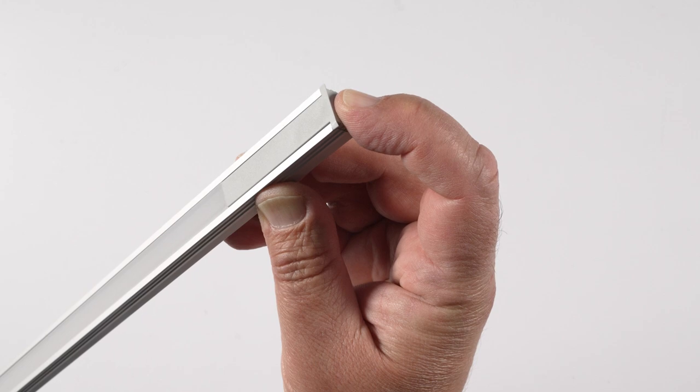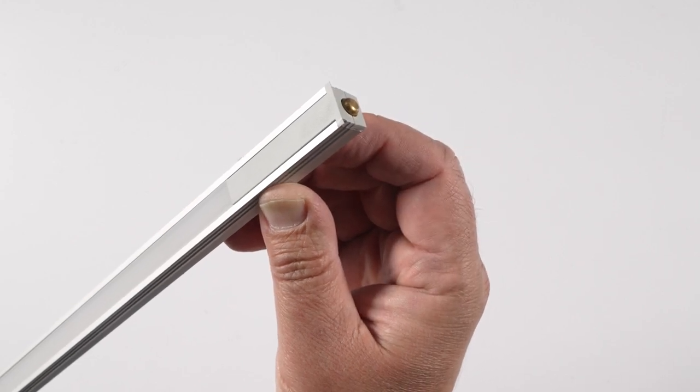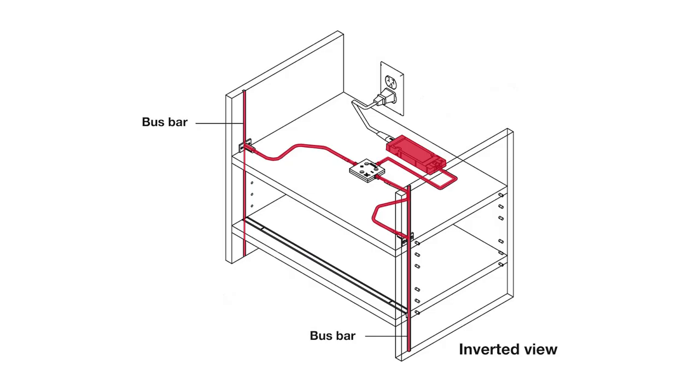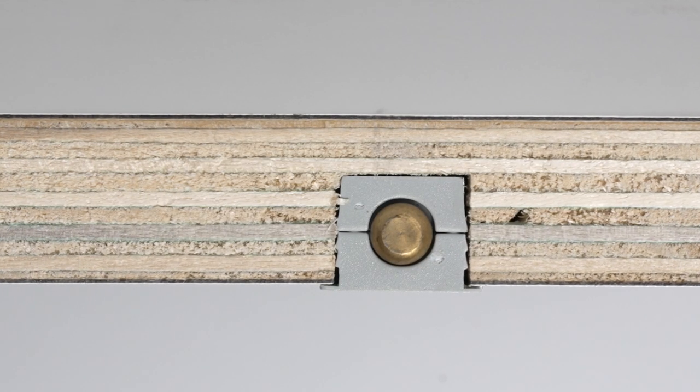The adjustable shelf light bars are built with spring-loaded contact assemblies that transfer the current from the bus bars to the light bar which is routed into the underside of the shelf.